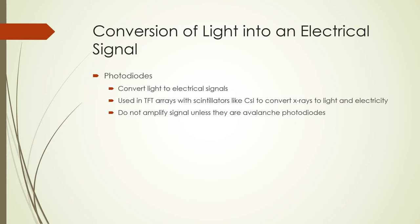Another device that converts light to electrical signals is the photodiode. In indirect digital x-ray detectors, amorphous silicon photodiodes were used in thin film transistor arrays with a cesium iodide scintillator to convert x-rays to light and electricity. Photodiodes are smaller in size than photomultipliers and can be built directly onto an x-ray detector chip. Most photodiodes do not amplify the signals, but if they are designed as avalanche photodiodes they provide some amplification, though not as much as a photomultiplier.